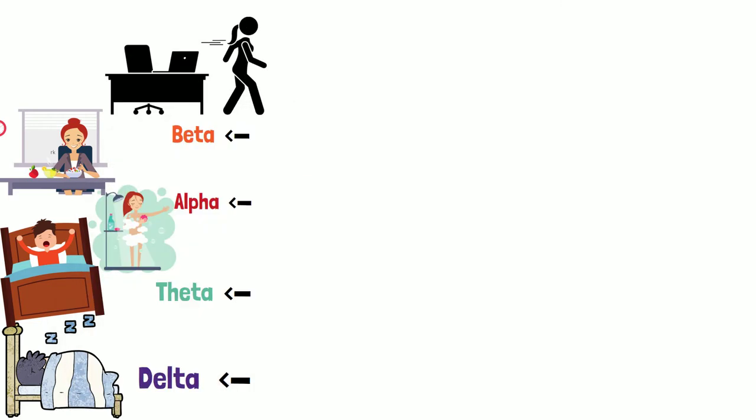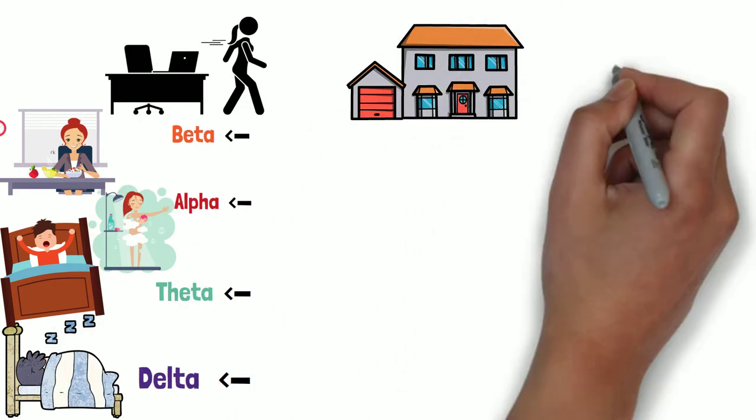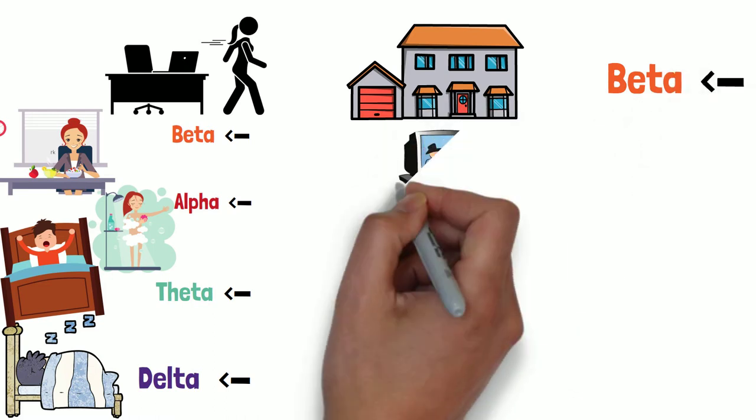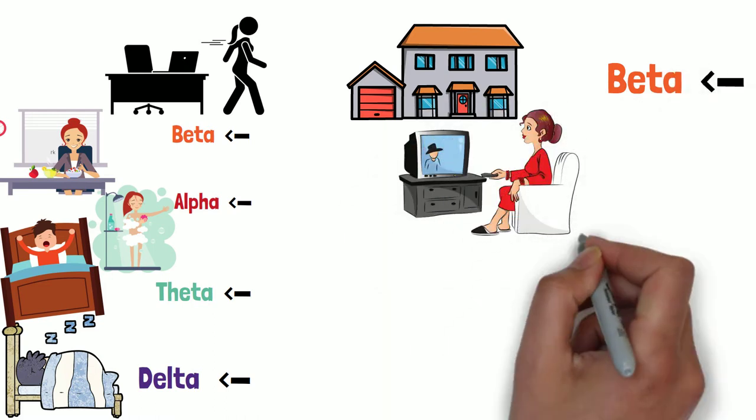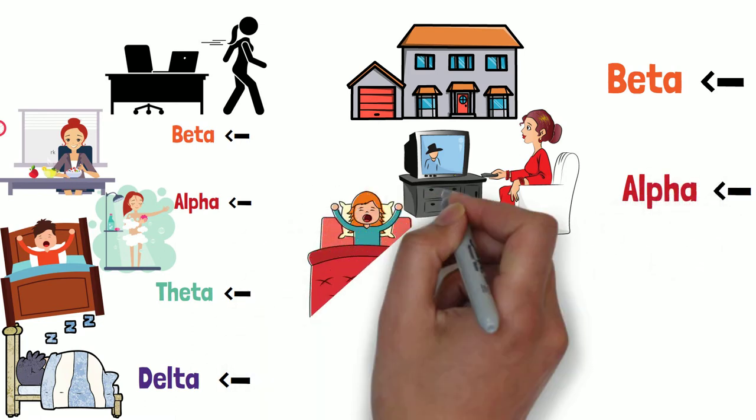Then you come back home. You've been operating in beta at work. You come home, you start to calm down. Your brain slips into the lower vibrational frequency, alpha calm consciousness. And as you start to get ready to go to bed, guess what?